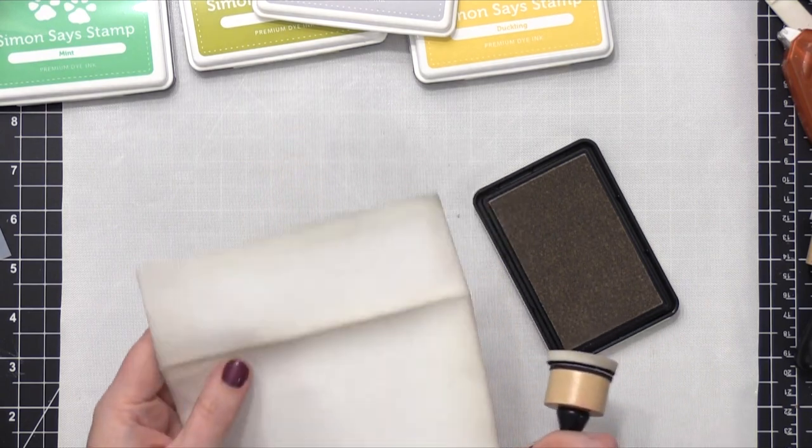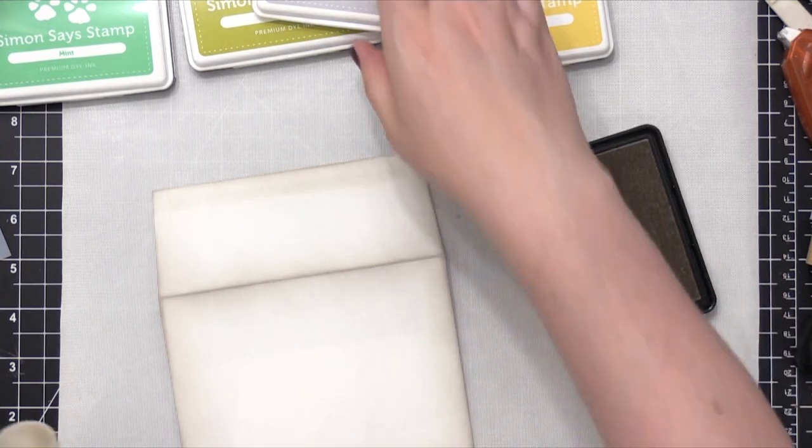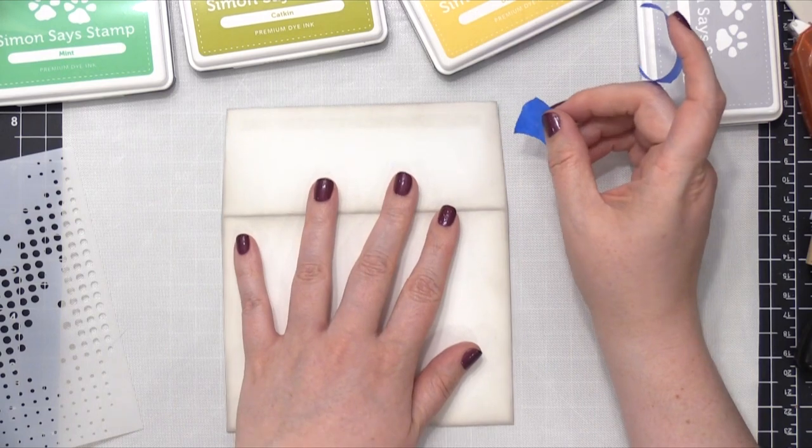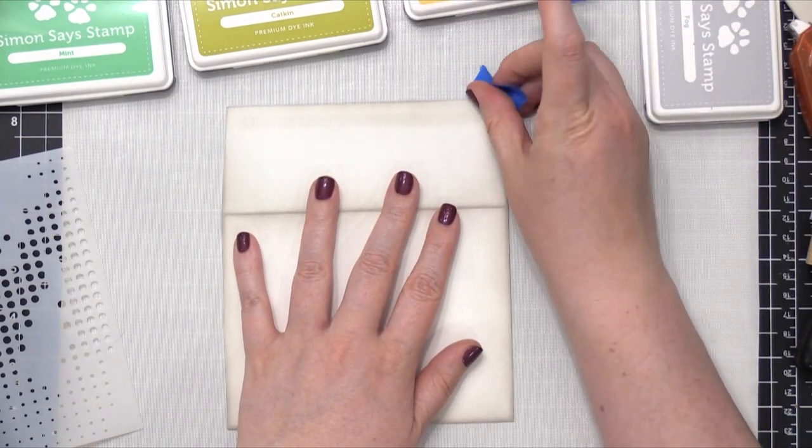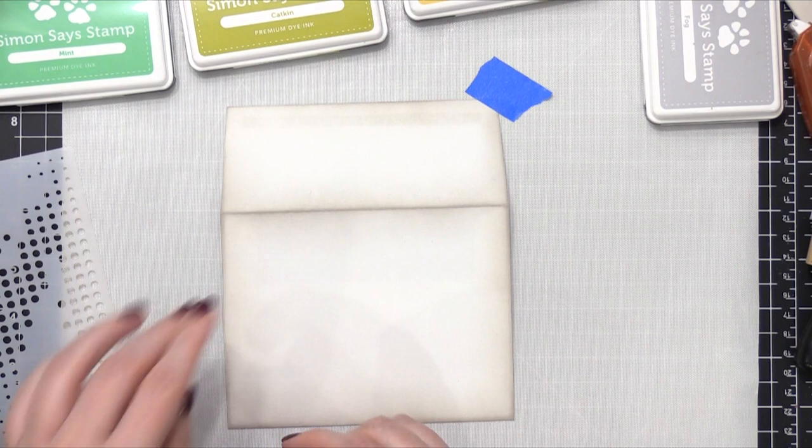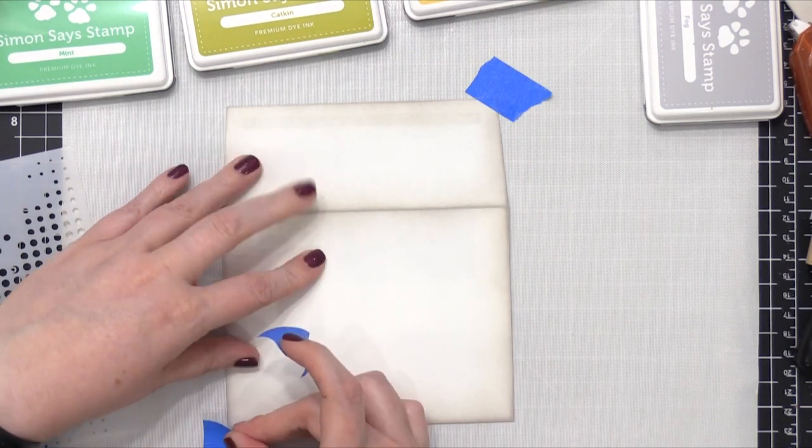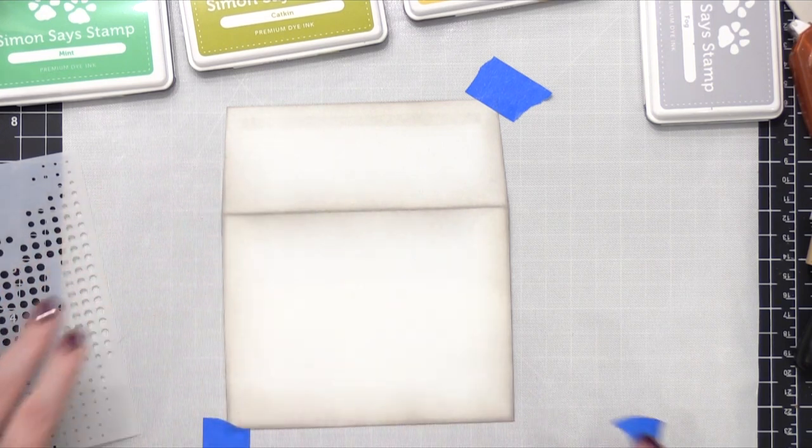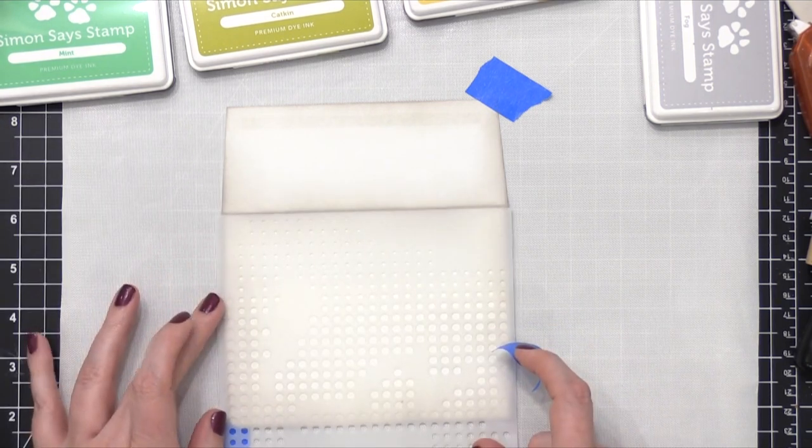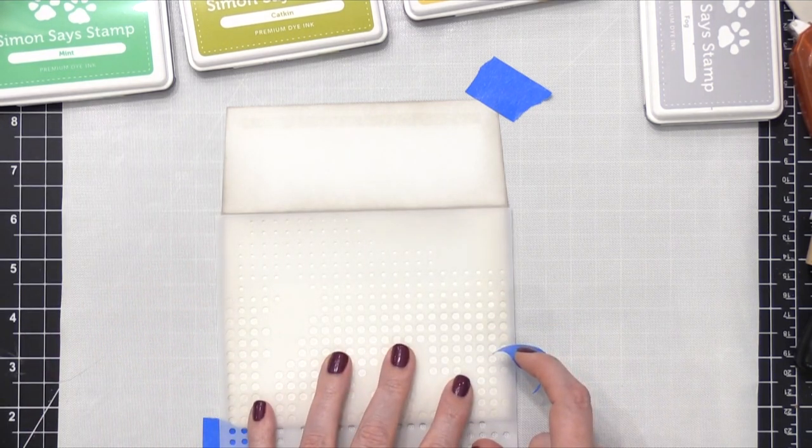So after I kind of ink blended each of those edges, including the fold, I taped it down to my work surface, and I'm gonna put the stencil down and add some color. And I wanted to specifically have a really light gray on the edges so that when I add these other lighter shades on top, it's not going to compete too much.